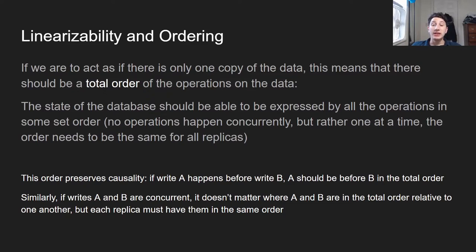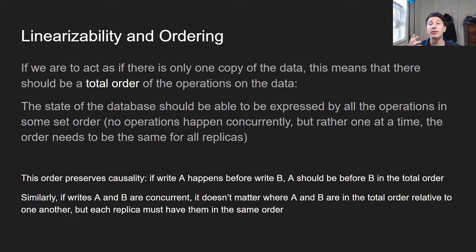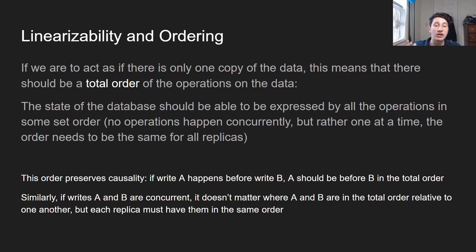So, linearizability and ordering. If we're going to act as if there's only one copy of the data, every single replica has the same exact copy, and any change is instantly propagated, it means there needs to be a total order of operations on the data. Every single replica's state can be expressed as an ordered sequence of writes, and every single replica has to have the same exact ordering. The fact that there's a total order means every single operation is ordered — not a partial ordering where some operations can be concurrent, but total: every single operation comes before another and after.